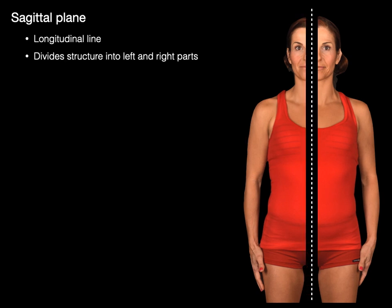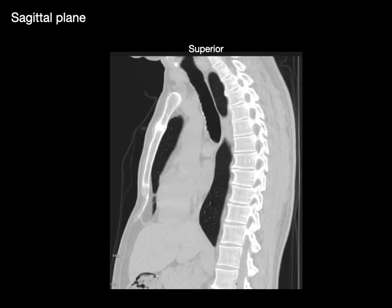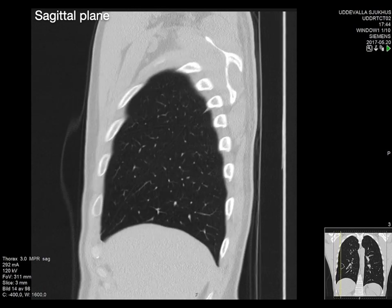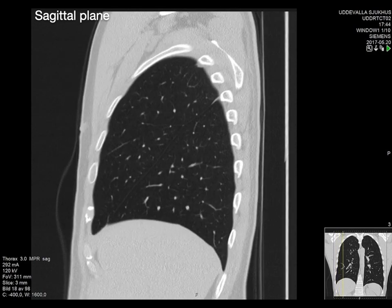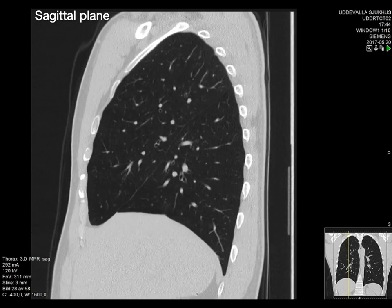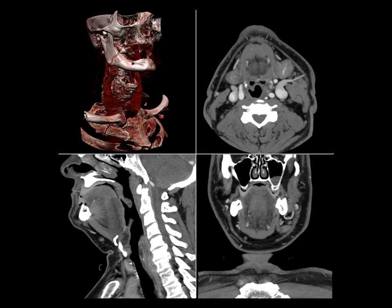A sagittal plane is a longitudinal line that divides the structure into left and right parts. This plane shows superior and inferior, anterior and posterior as you move through the image in a sagittal plane. You see the same thoracic anatomy in a really cool different view.